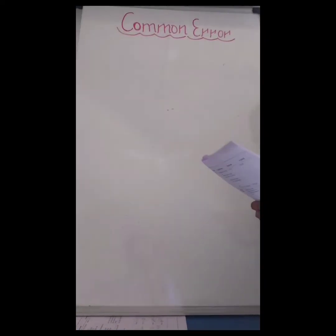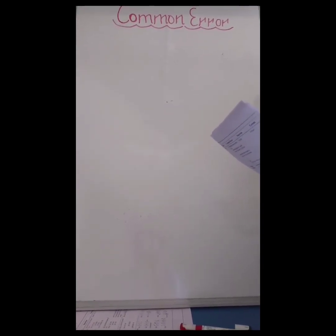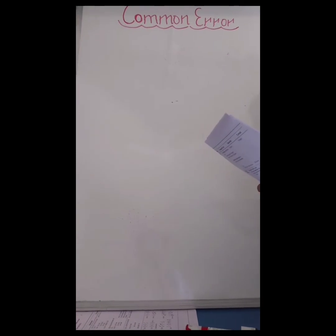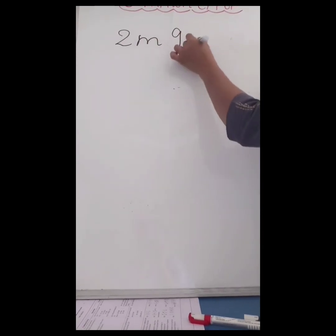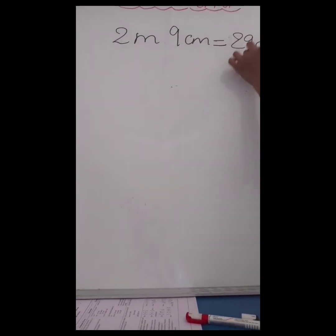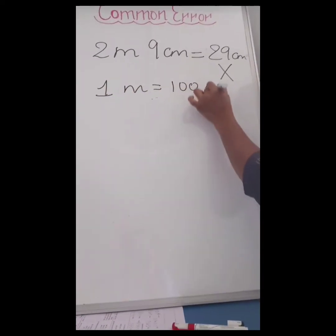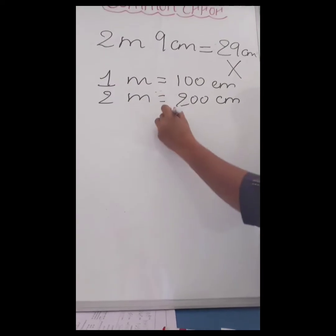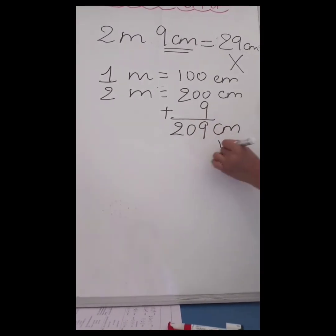Let's move ahead with the chapter on measurement. In measurement, expressing one unit in terms of another is very important, but students commonly make errors in conversion of units. For example, if I have written 2 meters 9 centimeters, children will write 29 centimeters, which is wrong. Because 1 meter equals 100 centimeters, 2 meters equals 200 centimeters, plus we add the 9 centimeters, giving 209 centimeters — which is correct.